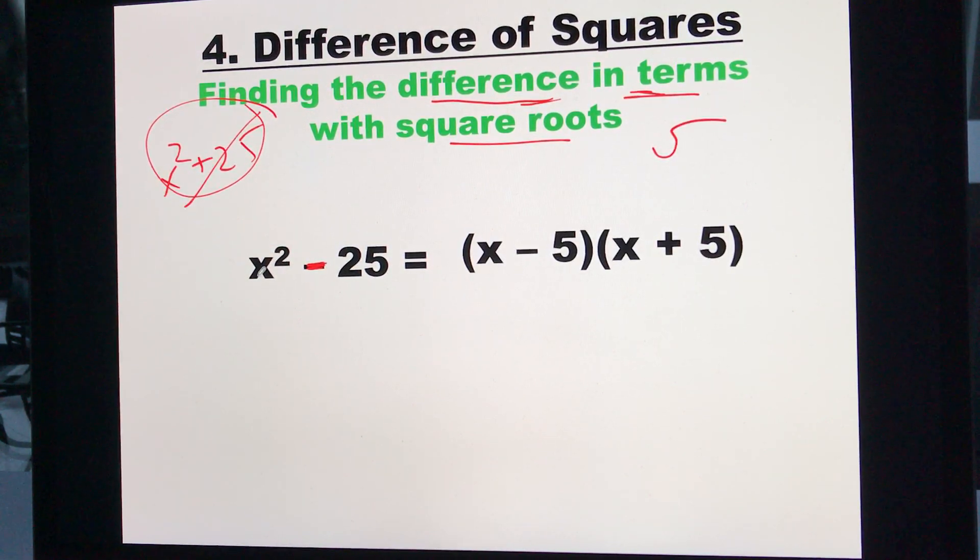I just square root the first one which is x and x. I square root the 25, which is 5 and 5. I make one of them negative and one of them positive and that's it. I can double check and see if I'm right.